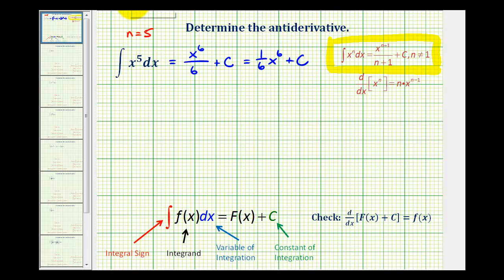And again, the main idea here is that if we differentiate this function or family of functions, we should get x to the fifth. So let's go ahead and check that. So the derivative of one-sixth x to the sixth plus C would be one-sixth times the derivative of x to the sixth, which would be six x to the fifth. Then the derivative of a constant would be zero. So notice if we put this six over one, this simplifies nicely, and we're left with x to the fifth, which verifies that we found the anti-derivative correctly.